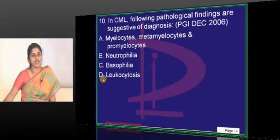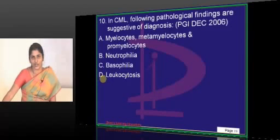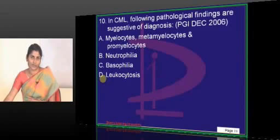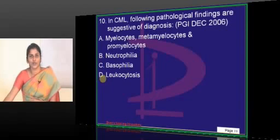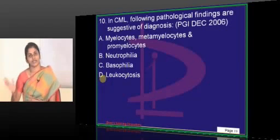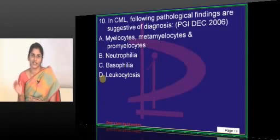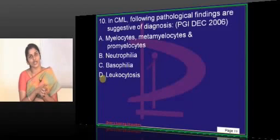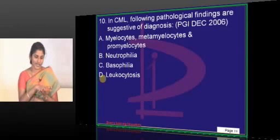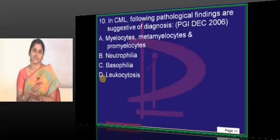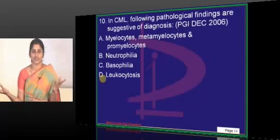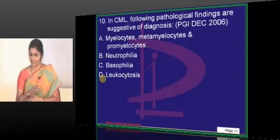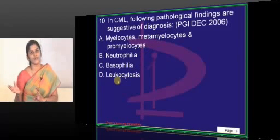Leukocytosis is a feature of CML. It does not mean every case of leukemia will have leukocytosis — for example, in acute leukemia, especially acute lymphoid leukemia, we have aleukemic leukemia and subleukemic leukemia where white cell counts may not be elevated. But in CML, leukocytosis is the rule. The peripheral blood picture of CML is called the garden party appearance — you find a variety of cells, not just one type, like people dressed in different clothes at a party.